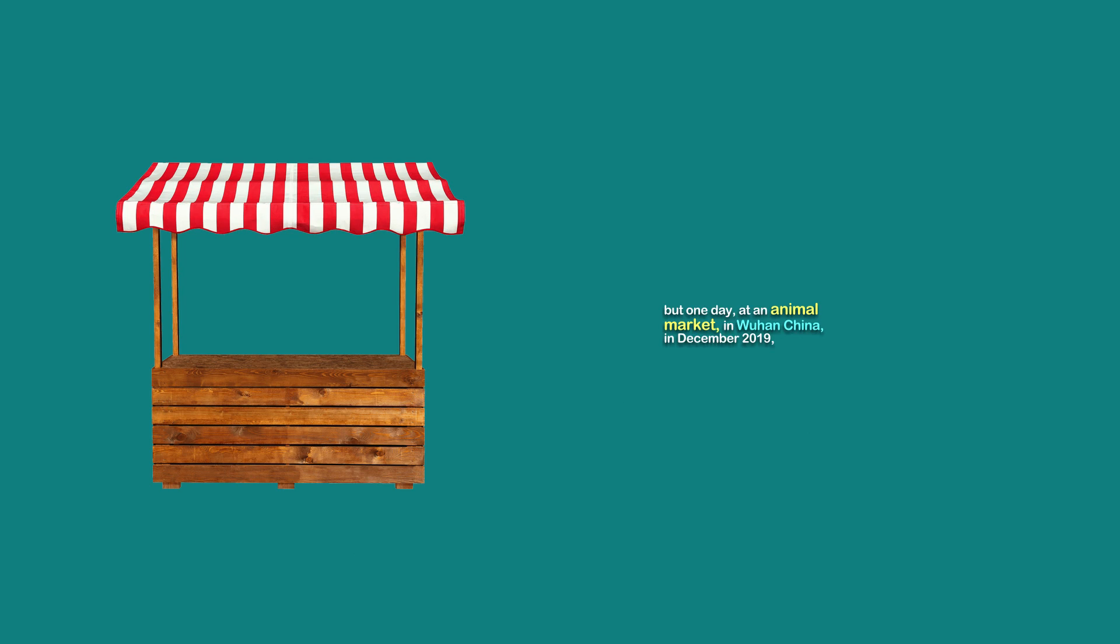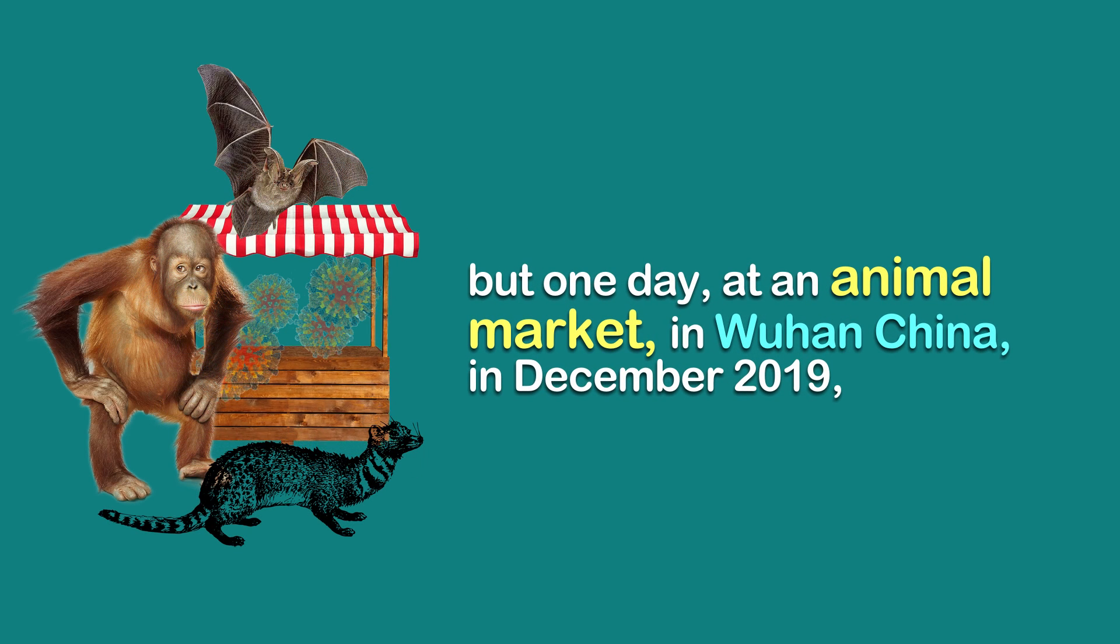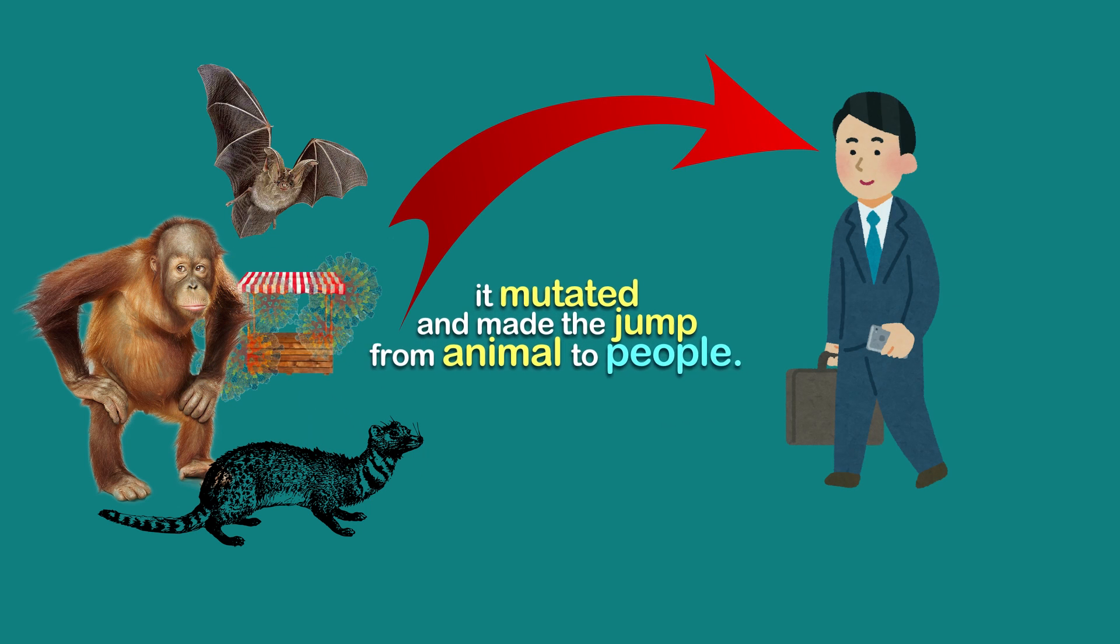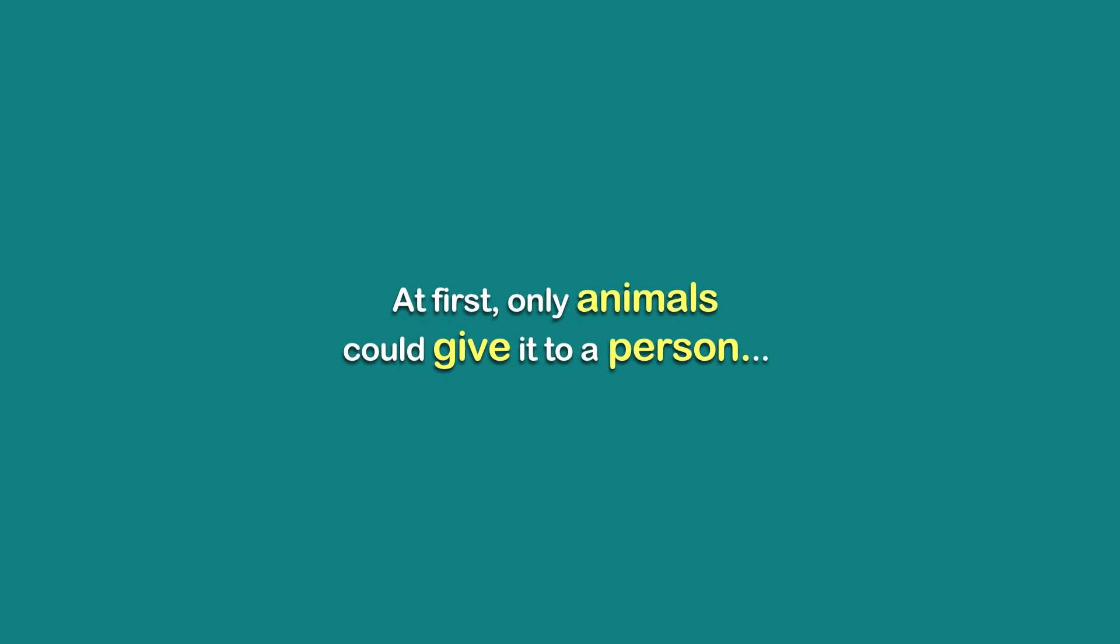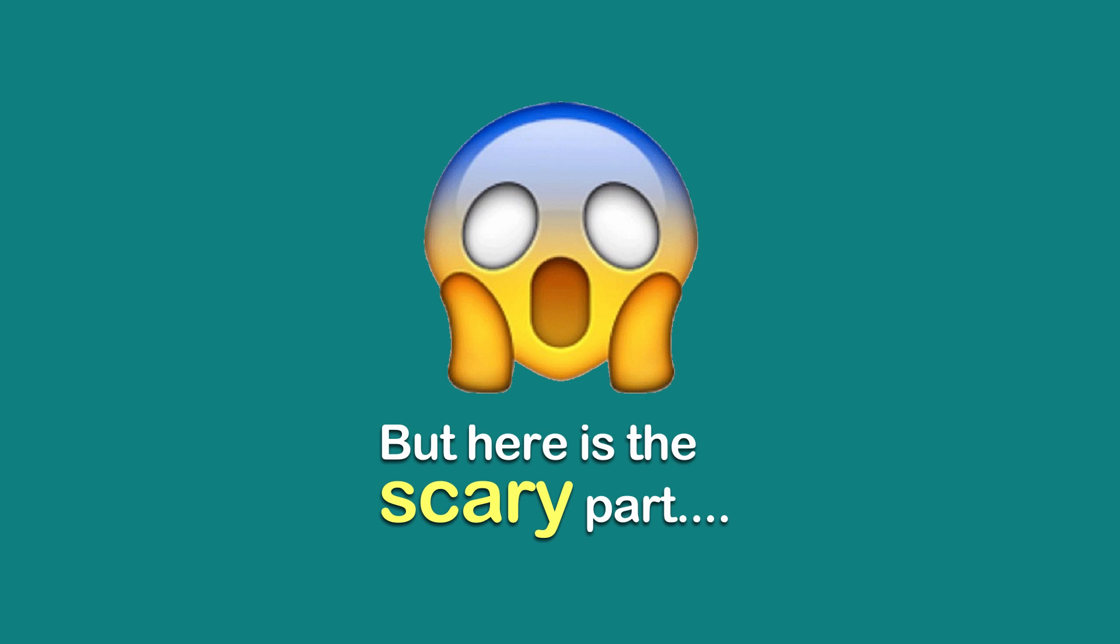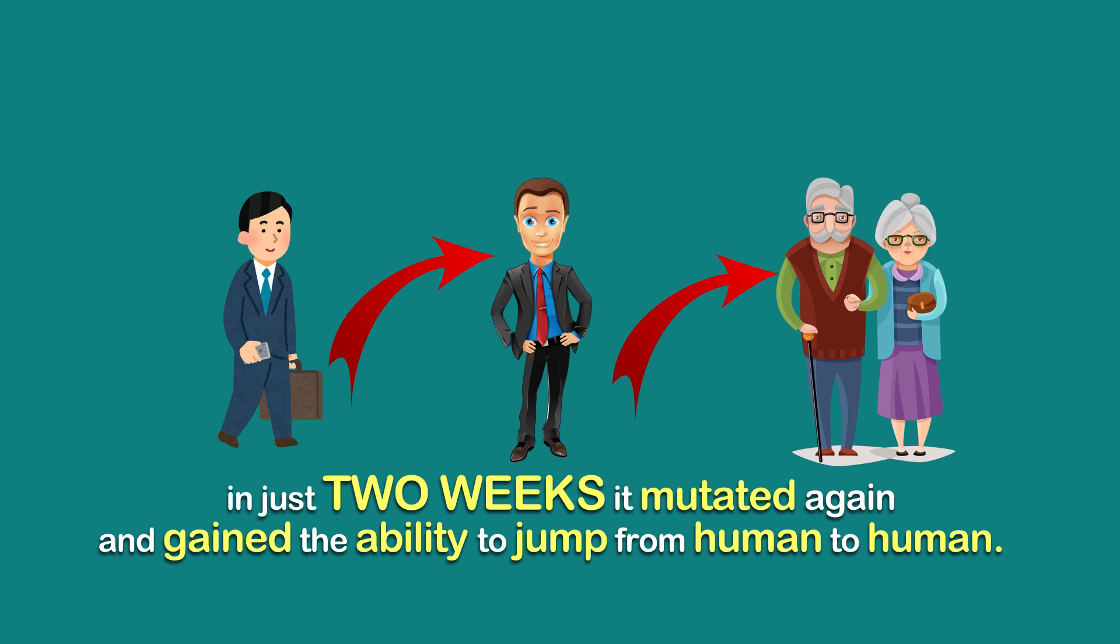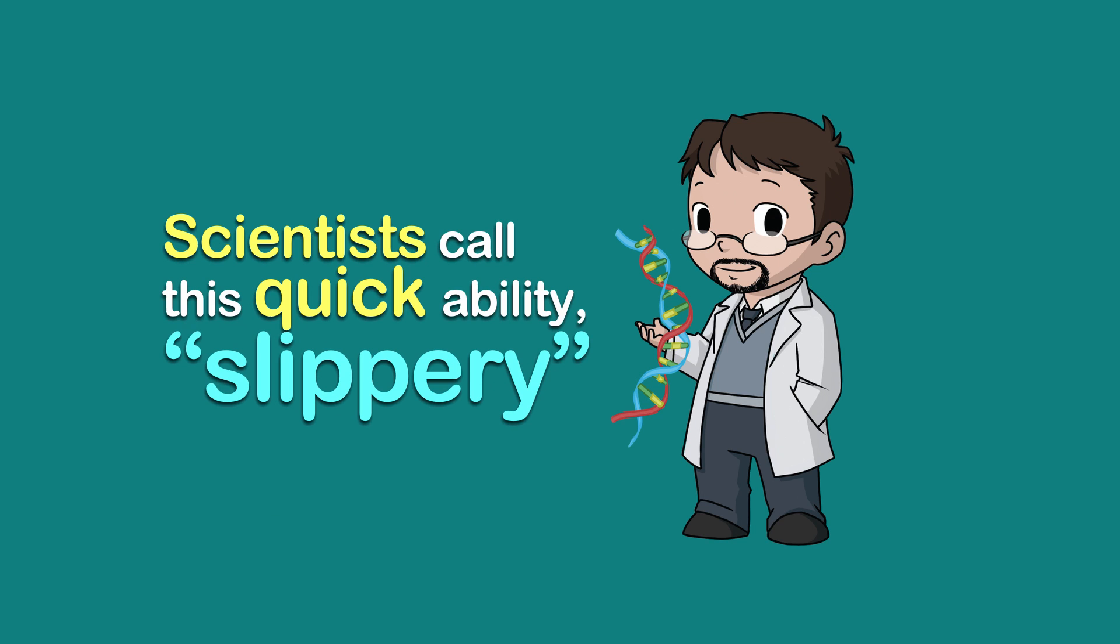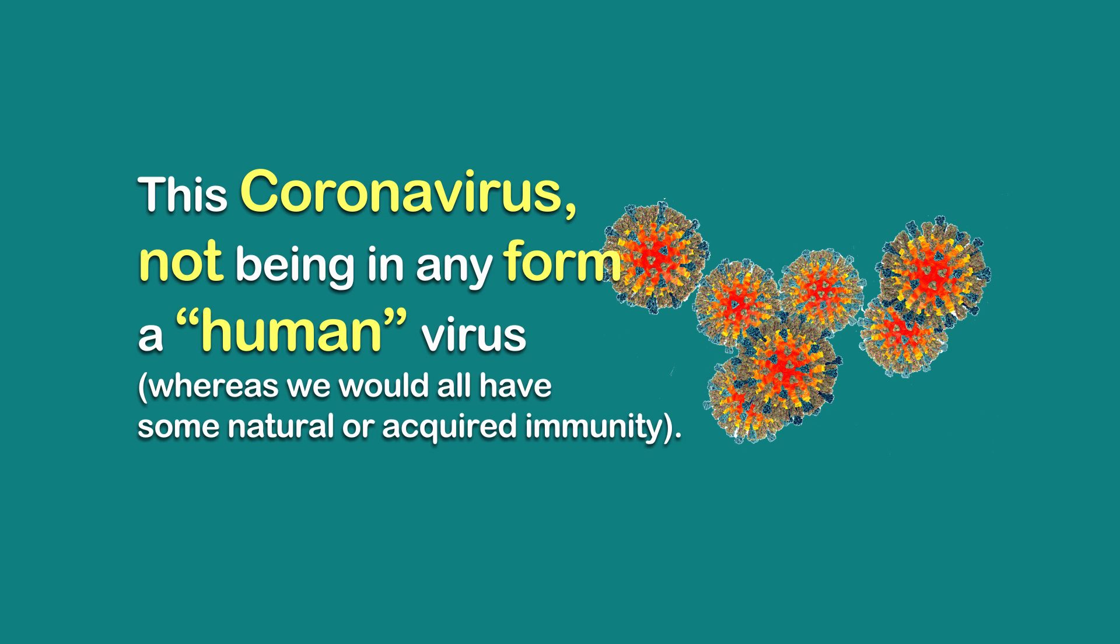But one day at an animal market in Wuhan, China, in December 2019, it mutated and made the jump from animal to people. At first, only animals could give it to a person, but here's the scary part: in just two weeks it mutated again and gained the ability to jump from human to human. Scientists call this quick ability slippery. This coronavirus, not being in any form a human virus where we would all have some natural or acquired immunity, propelled off like a rocket.